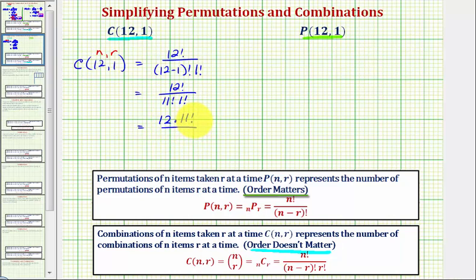So we have 12 times 11 factorial divided by 11 factorial times 1 factorial. 11 factorial divided by 11 factorial is equal to 1, and 1 factorial is also equal to 1, so this simplifies to 12.